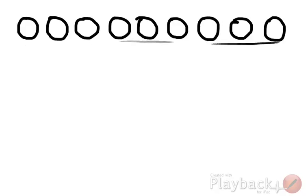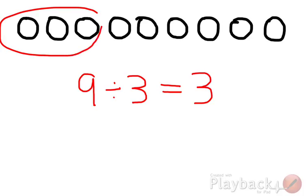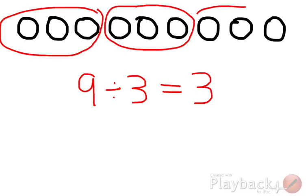Now we have 9 objects and we want to divide them into 3 groups. We have to give 3 to each group. So we write it as 9 divided by 3 gives 3. That's how division works. I hope you understand what division is now. Division is equal distribution or sharing of things.